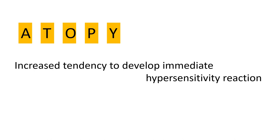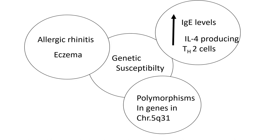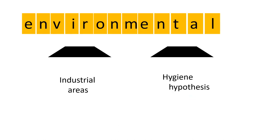What does the term atopy mean? Atopy actually means increased tendency to develop immediate hypersensitivity reaction. Atopy is genetically determined. The people who get atopy are those with other allergic disorders like allergic rhinitis, eczema, those with higher level of IgE or higher level of IL-4 producing TH2 cells than other general population, and those with polymorphism in certain genes like the ones located in chromosome 5q31 region.